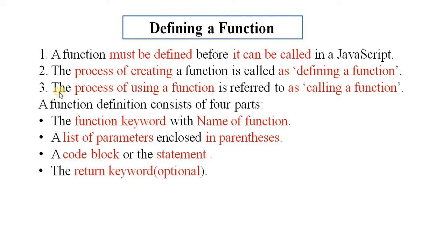The function name is any valid identifier and it is a compulsory, required part that indicates the name of the function. The list of parameters includes parameter names separated by commas enclosed in parentheses. The code block or statements form the body of the function and are executed whenever the function is invoked. The code to be executed by the function is placed inside the curly brackets.